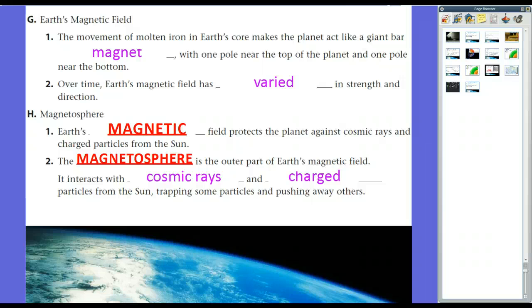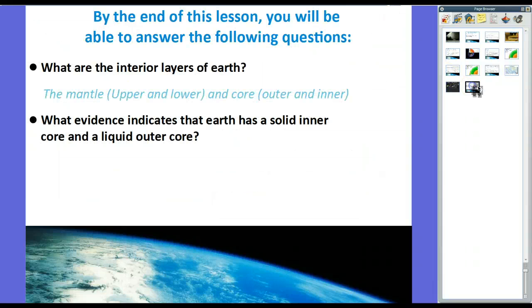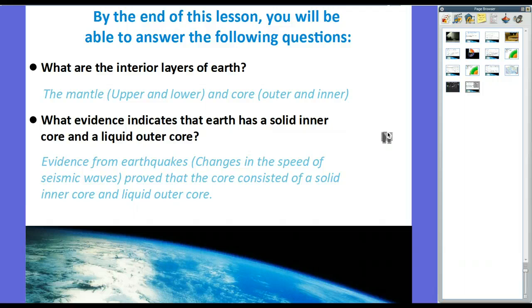So without the magnetosphere, life wouldn't exist as we know it here on Earth. So that's all the parts of the Earth, the core, the mantle, the crust, the magnetosphere, and all that stuff. So let's go ahead and let's review our questions we were supposed to answer. By the end of this lesson, you would be able to answer the following questions. What are the interior layers of the Earth? The mantle, there's an upper mantle and lower mantle, and then there's a core, there's an outer core, and there's the inner core. And also what evidence indicates that Earth has a solid inner core and a liquid outer core? Well, evidence from earthquakes, and this evidence was the changes in speed of seismic waves proved that the core consisted of a solid inner core and a liquid outer core. The changes in speed showed us that there were different elemental materials in different states of matter that helped us understand that.